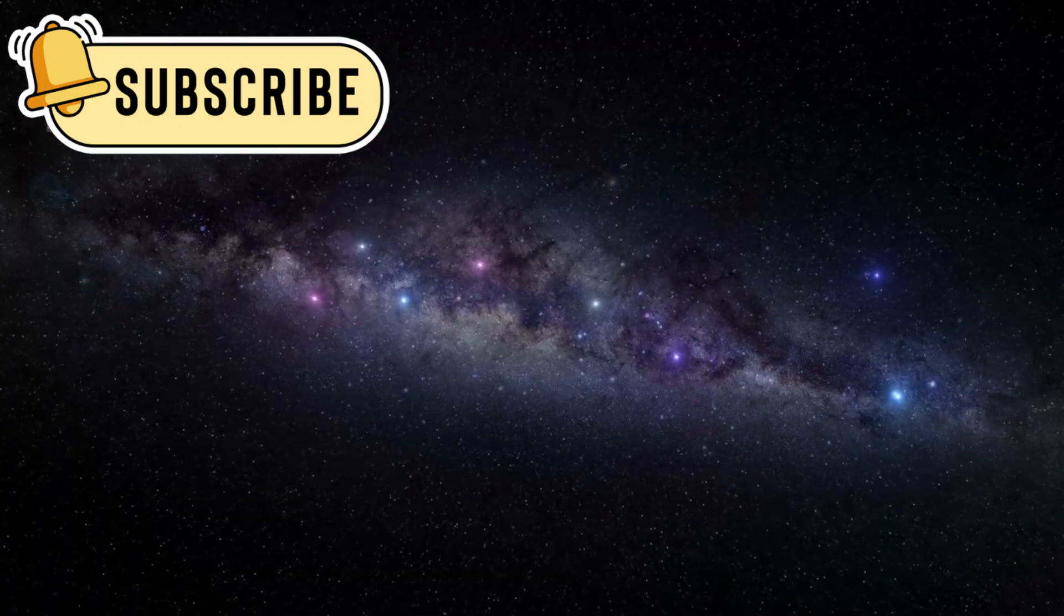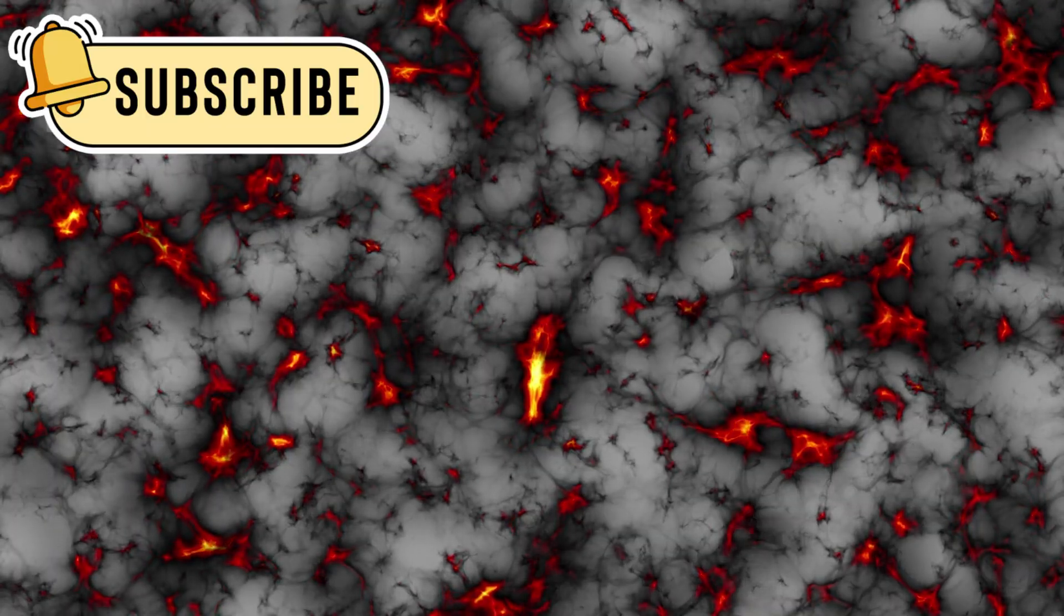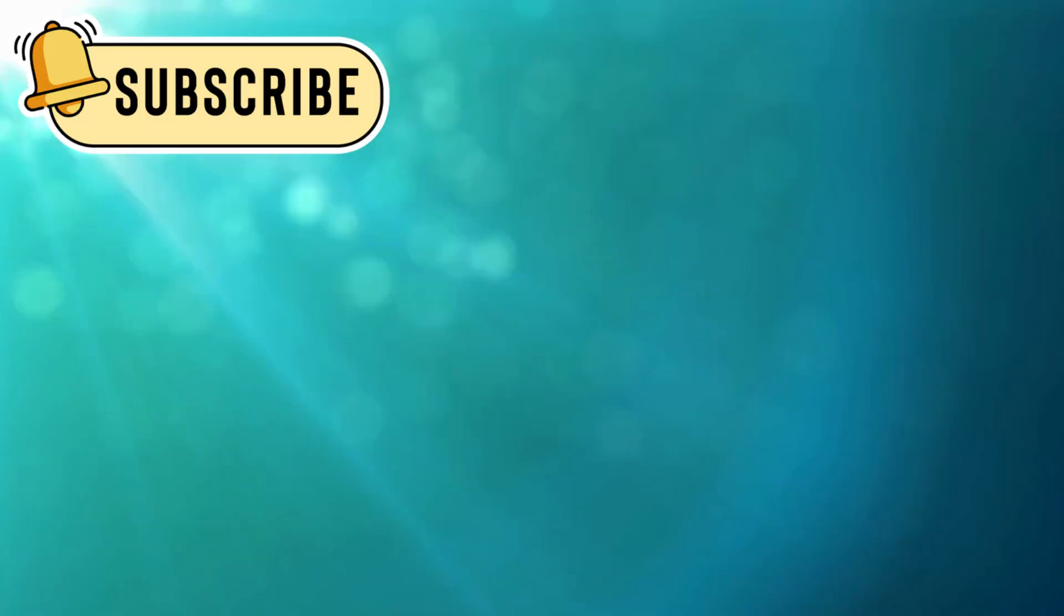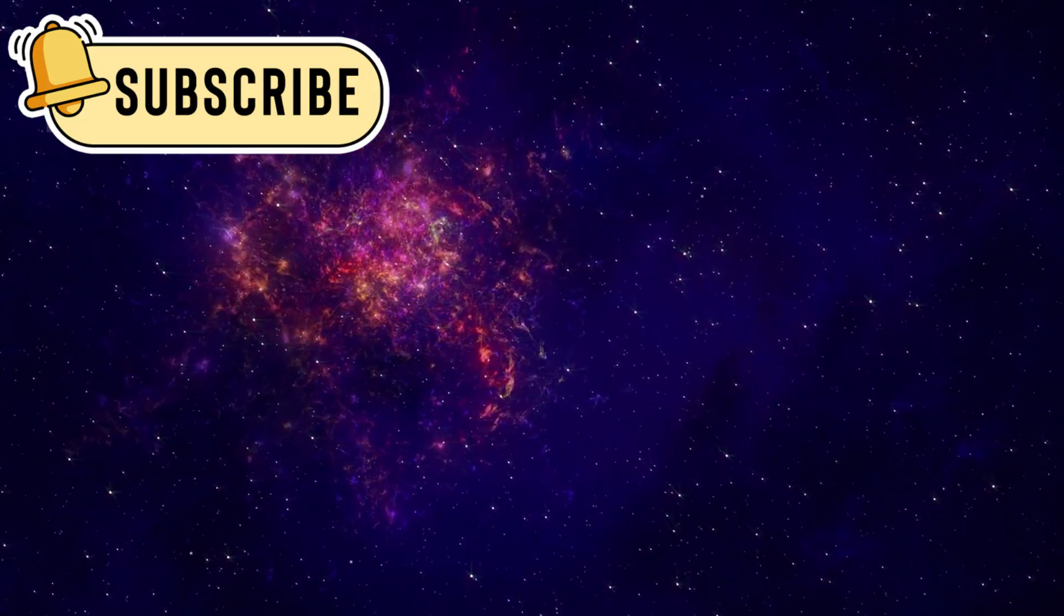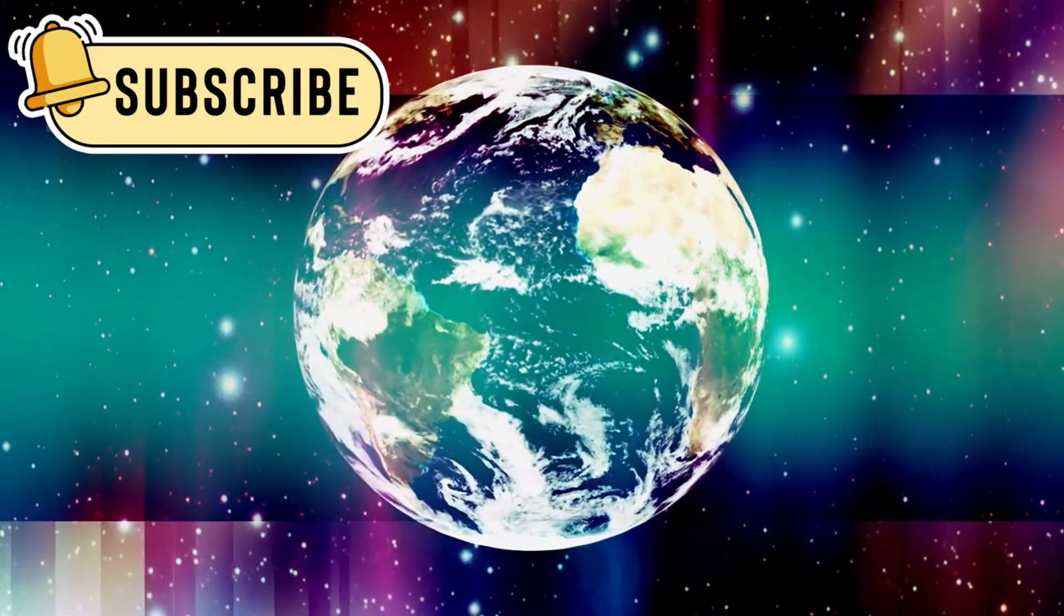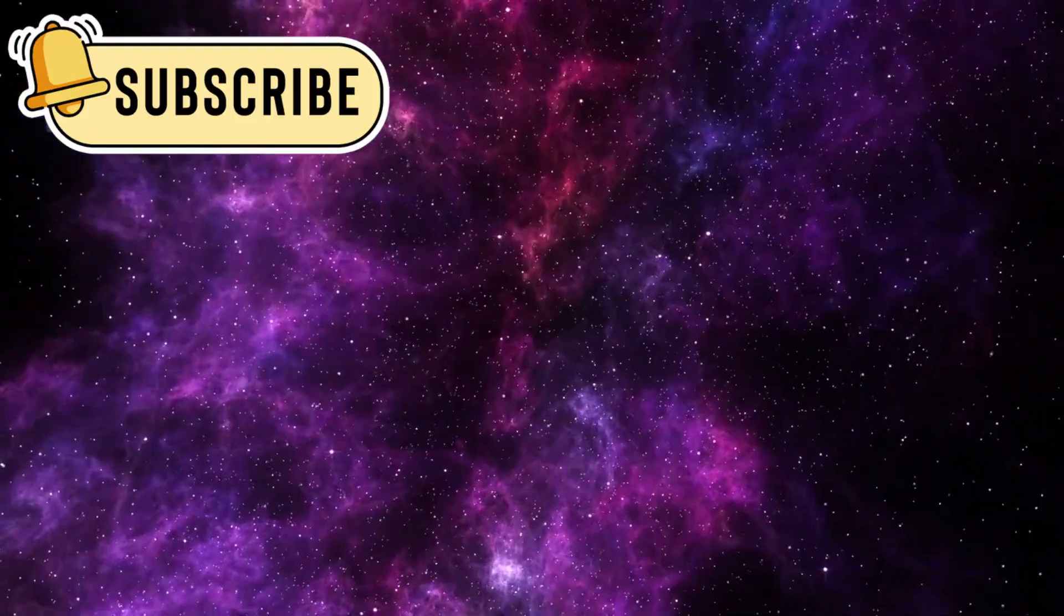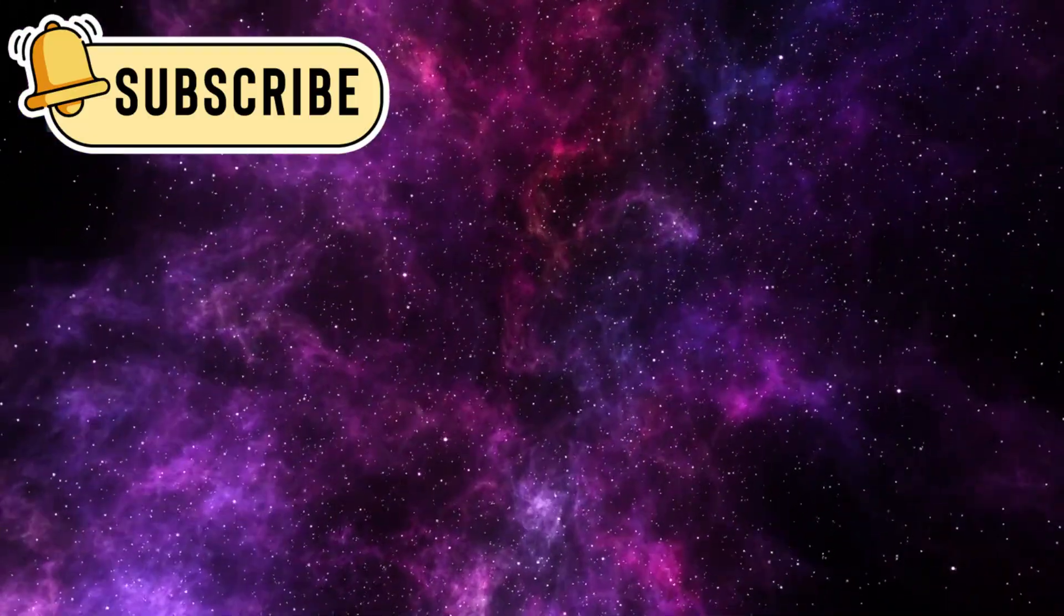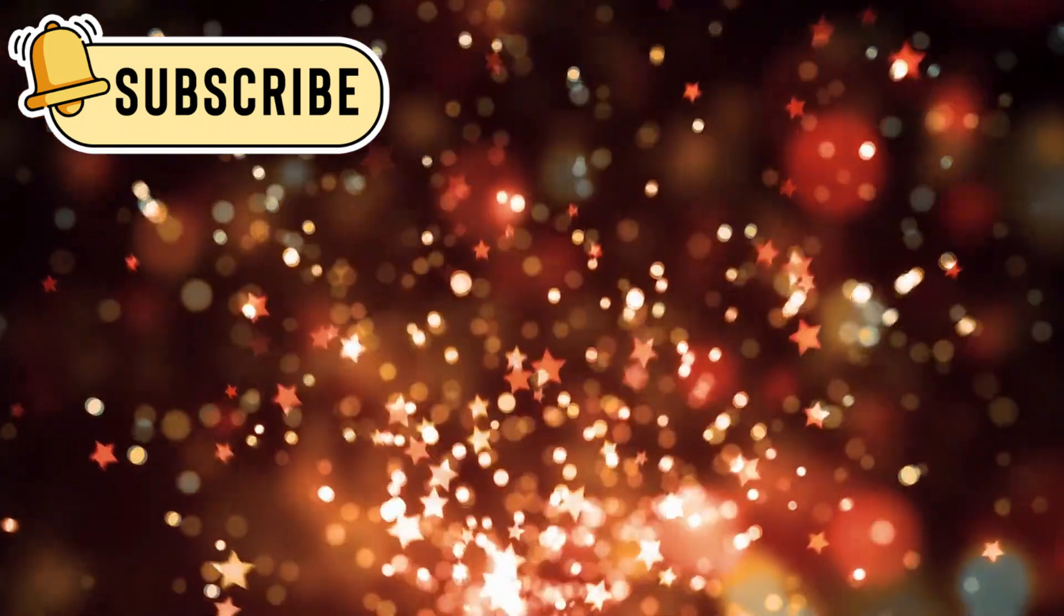As researchers examined the image, another pattern emerged. The galaxies were not scattered randomly. They aligned along vast invisible bridges called filaments. These filaments stretch across enormous distances. Together they form the cosmic web, a structure made of dark matter and gas. It connects galaxies into giant systems. Some of these structures span billions of light years.